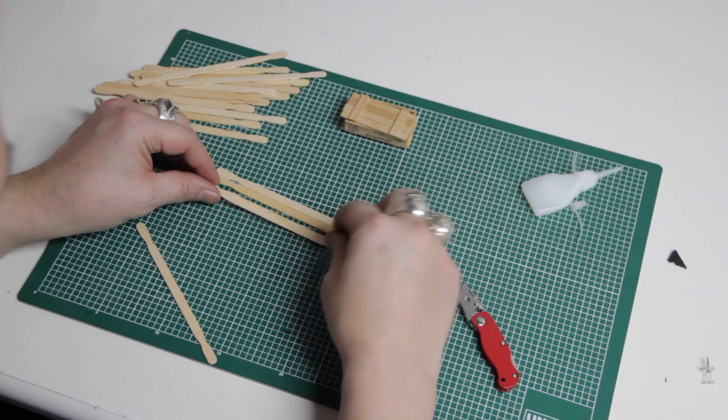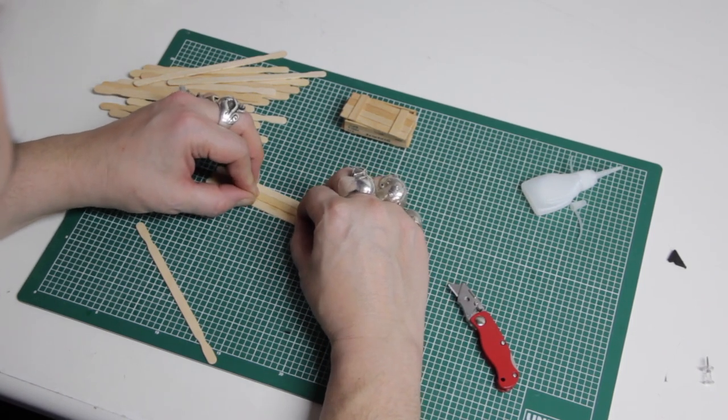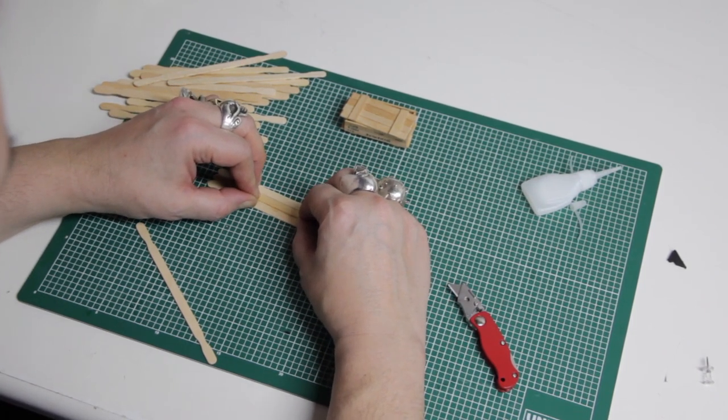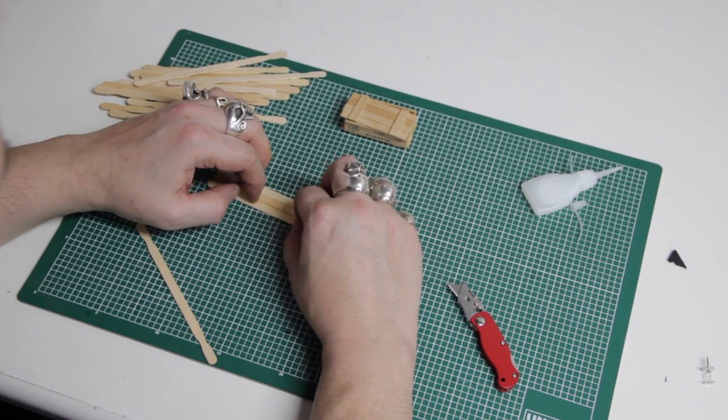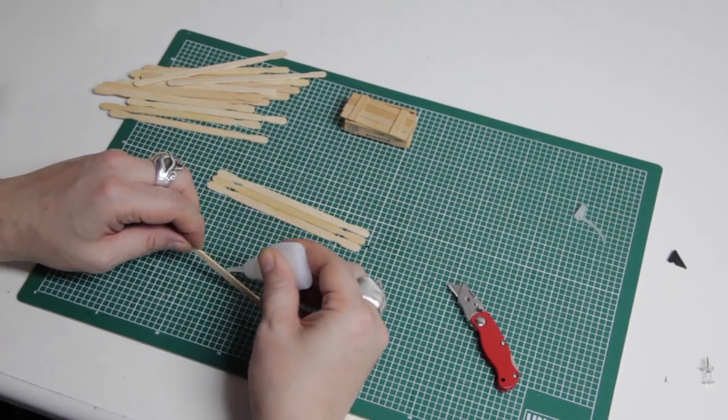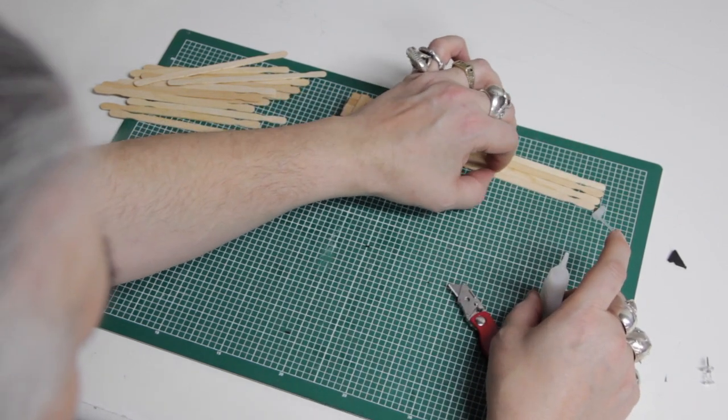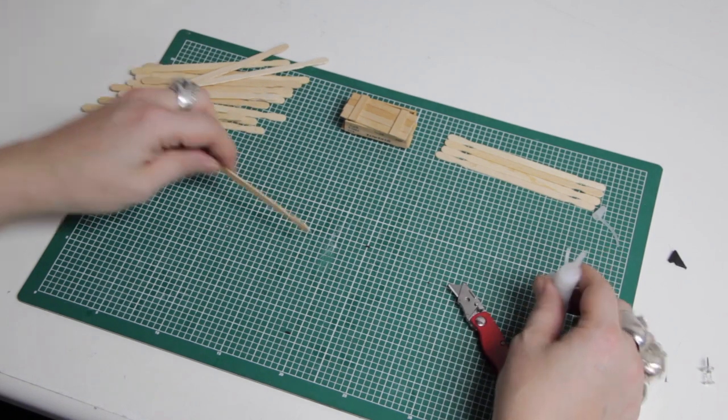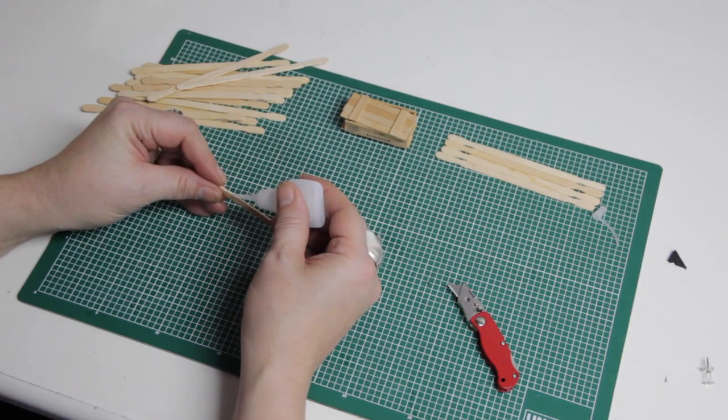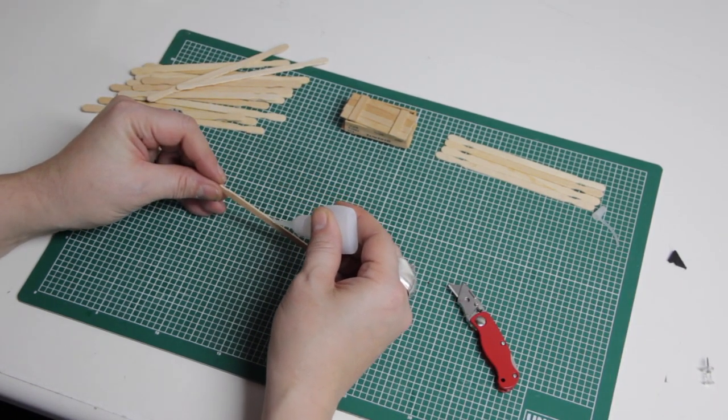If it doesn't stick straight away, just let it dry a bit and then use dry glue as a basis to put your second coat on and it should stick. Once you've got four together, put them to one side. Take that dry off. We're going to need two of those with four lots of stirrers.